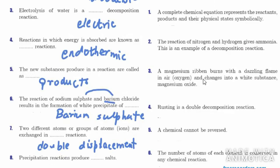Now for true or false. First: a complete chemical equation represents the reactants, products, and their physical states symbolically — True. Second: the reaction of nitrogen and hydrogen to give ammonia is an example of a decomposition reaction — False, since in a decomposition reaction only one substance should be present. Third: magnesium ribbon burns with a dazzling flame in air and changes into a white substance — True.